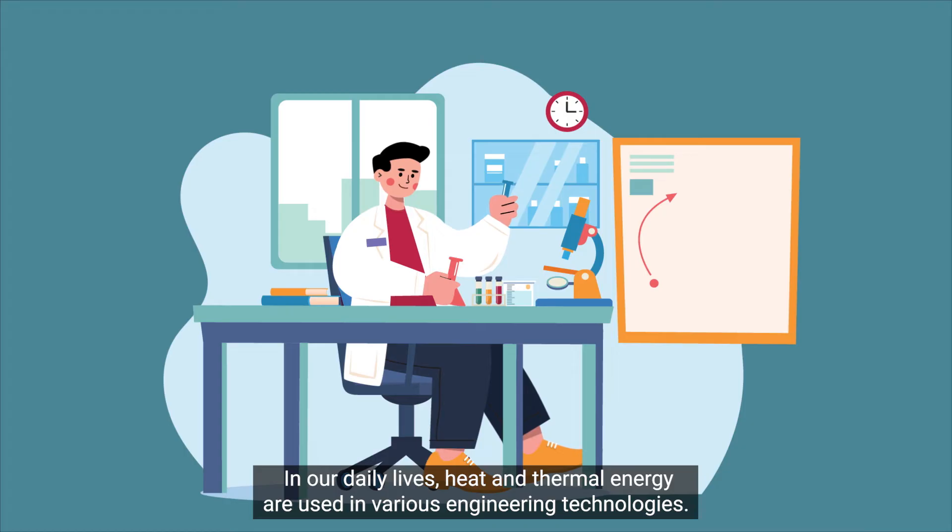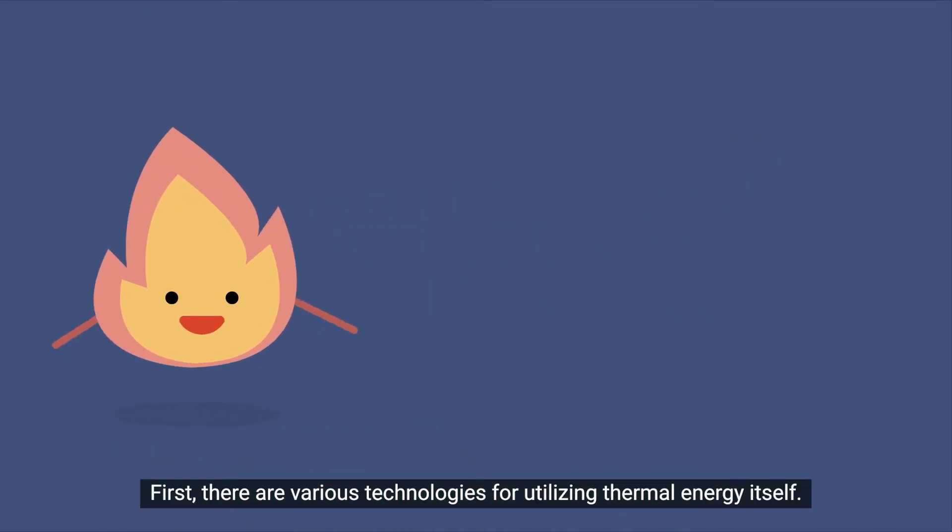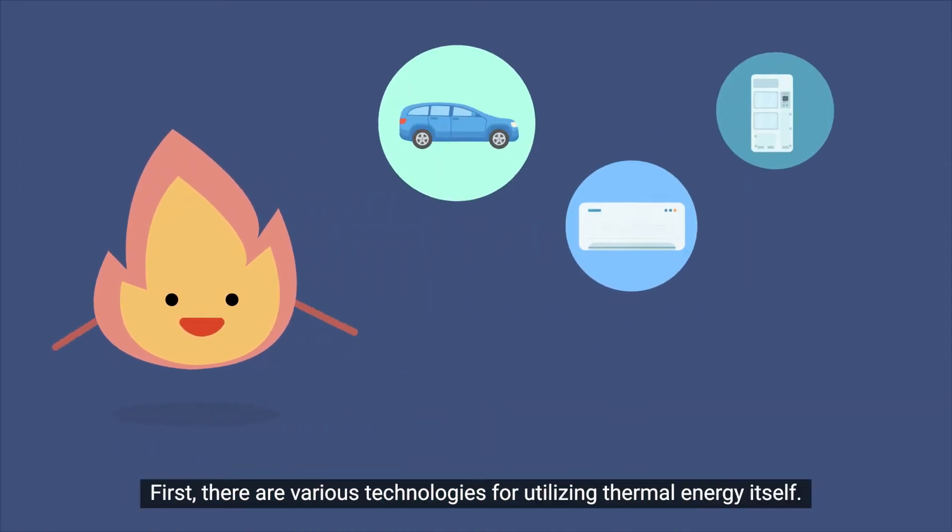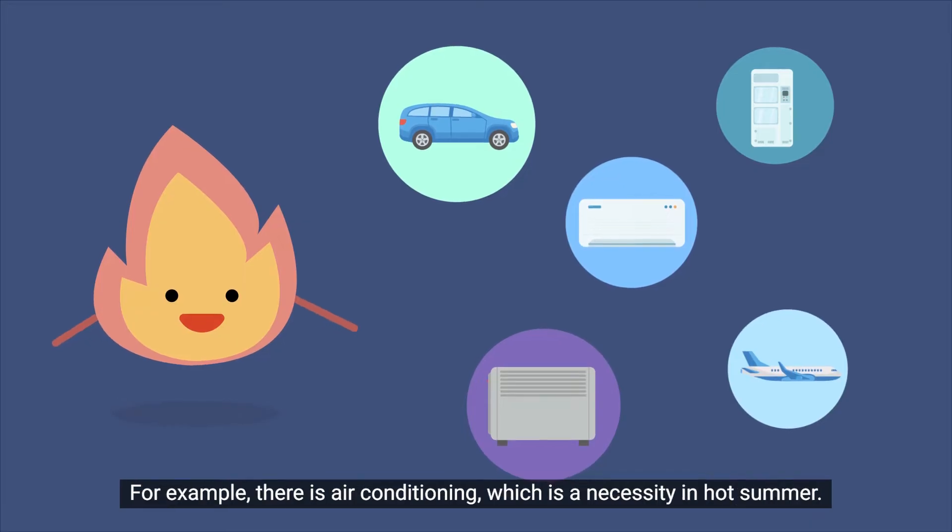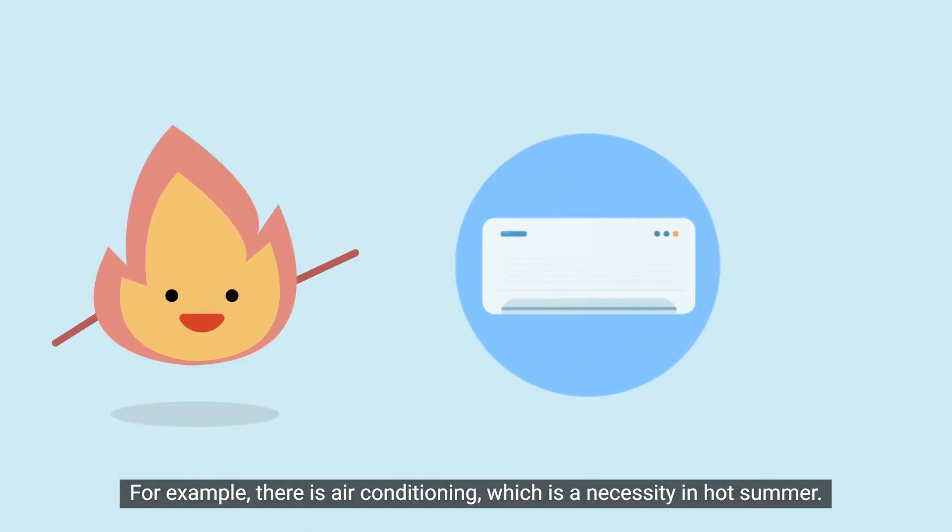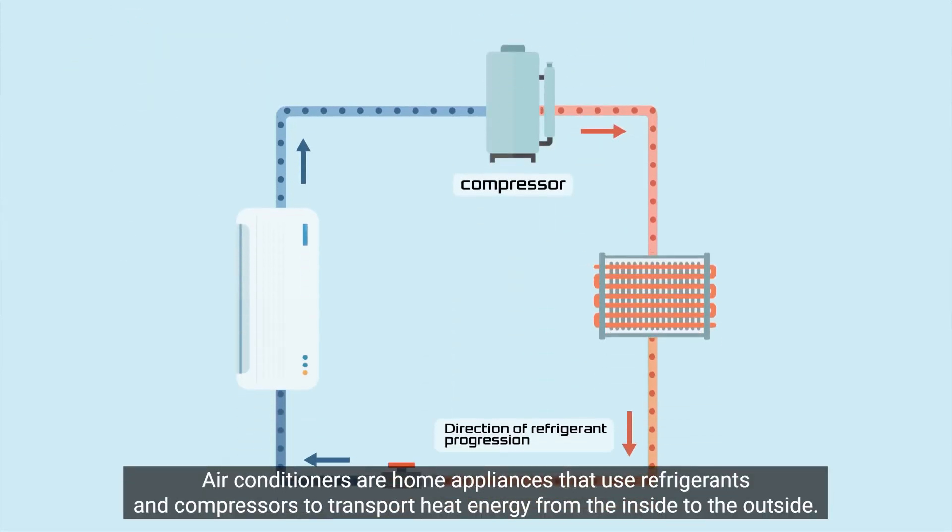In our daily lives, heat and thermal energy are used in various engineering technologies. First, there are various technologies for utilizing thermal energy itself. For example, there is air conditioning, which is a necessity in hot summer. Air conditioners are home appliances that use refrigerants and compressors to transport heat energy from the inside to the outside.